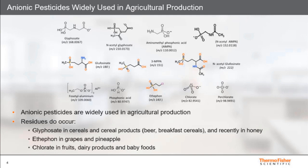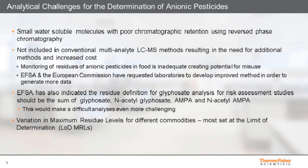Anionic pesticides are widely used in agriculture and residues are often detected in food. For example, glyphosate is commonly detected in breakfast cereals, beer, and more recently in honey. Amitrole has been detected in grapes and pineapples, while chlorate has been detected in fluids, dairy products, and baby food. There is clearly a need to improve methods for monitoring, but ionic polar pesticides present a number of analytical challenges. They are small water-soluble molecules with poor chromatographic retention using reverse-phase chromatography, so are usually not included in conventional multi-analyte LC-MS methods.